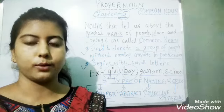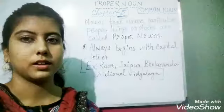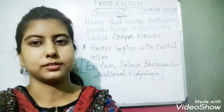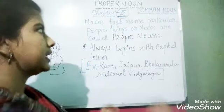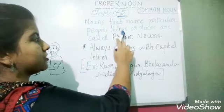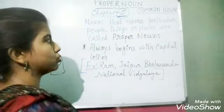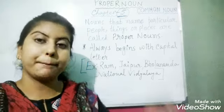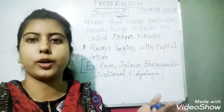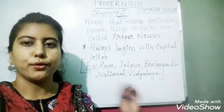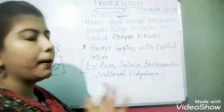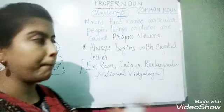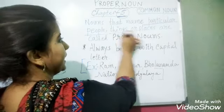Now we will move on to proper nouns. We will learn about proper nouns and first look at the definition. Nouns that name particular people, things, or places are called proper nouns. So proper nouns are naming words that we use to denote a particular person, a particular thing, or a particular place. We will not use proper nouns for general purposes — common nouns are for general purposes and proper nouns are for particular purposes.